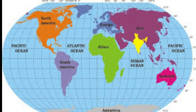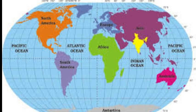India is bounded by three water bodies: the Indian Ocean, the Arabian Sea, and the Bay of Bengal. The Arabian Sea touches Gujarat, Daman and Diu, Maharashtra, Goa, Karnataka, Kerala, and Tamil Nadu. The Lakshadweep Islands are situated in the Arabian Sea. The states and union territories situated on the Bay of Bengal include West Bengal, Odisha, Andhra Pradesh, Puducherry, Tamil Nadu, and the Andaman and Nicobar Islands.